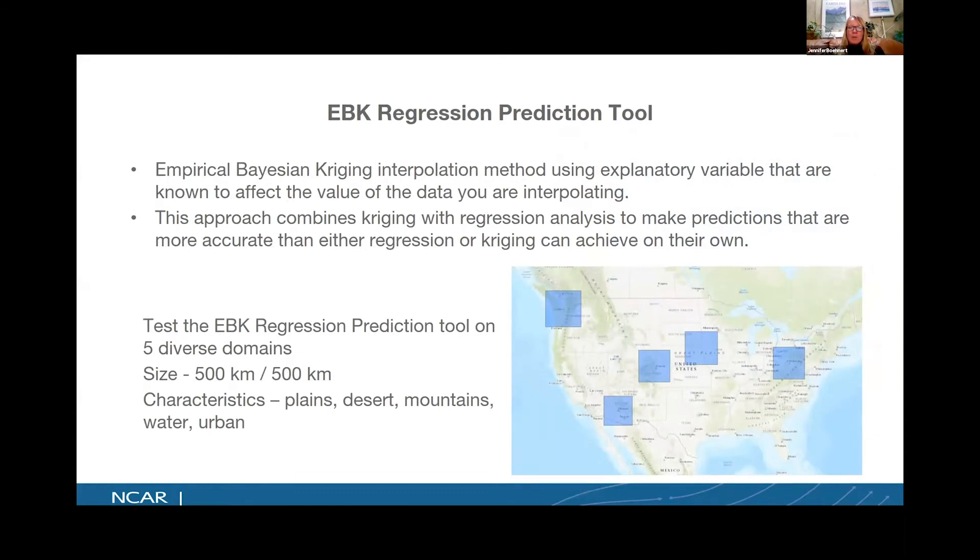With ArcGIS Pro, they have a new tool called the EBK regression prediction tool. This particular tool takes EBK interpolation methods and explanatory variables in order to interpolate your surface. So it combines Kriging with regression analysis in order to predict information. And by combining these two together, we actually get more accurate predictions than just using regression or Kriging alone.